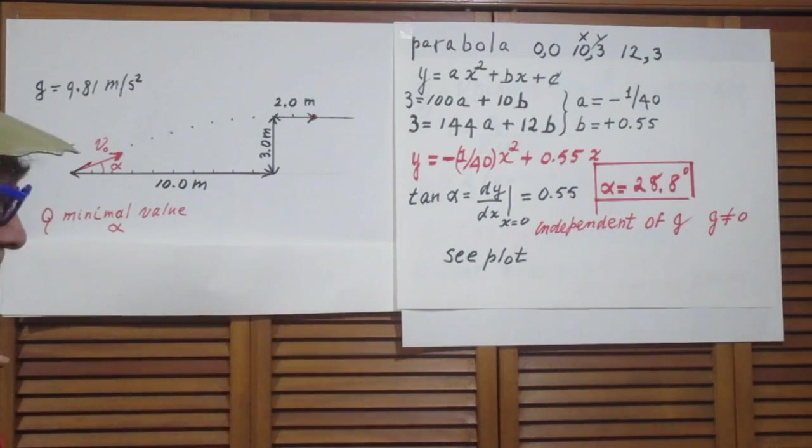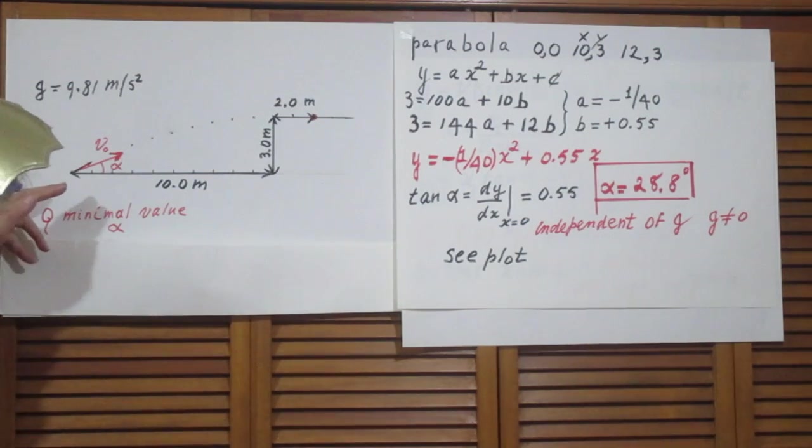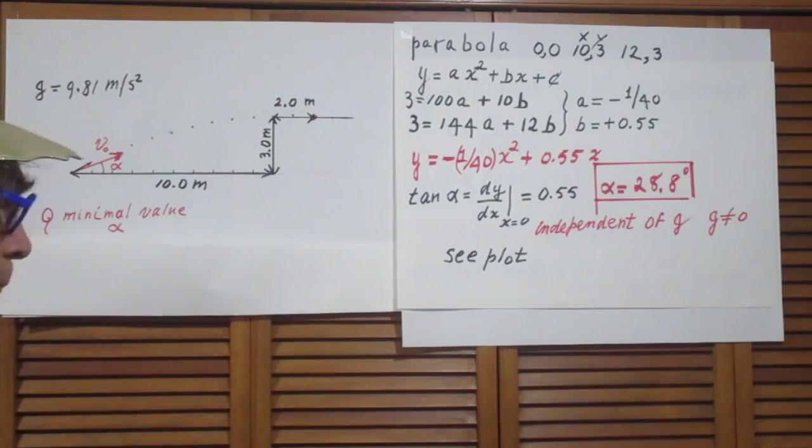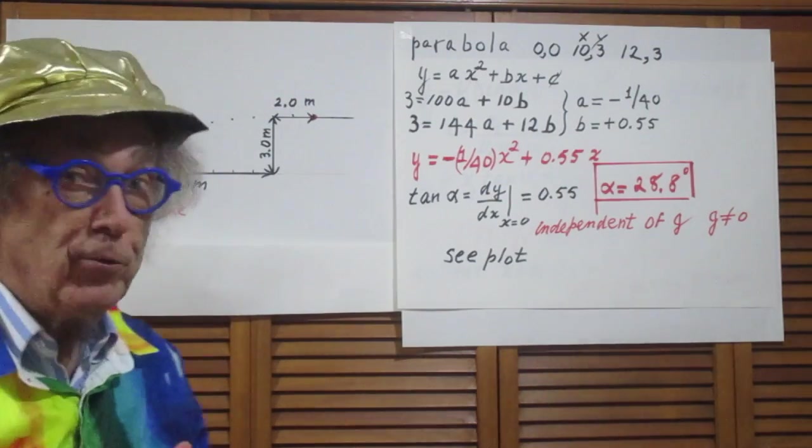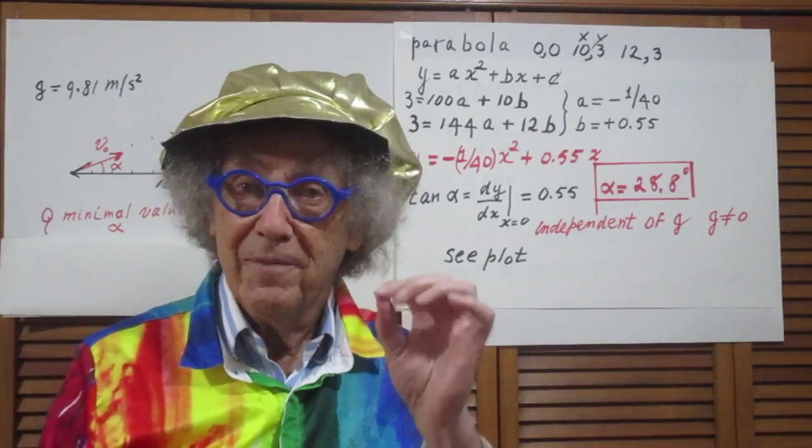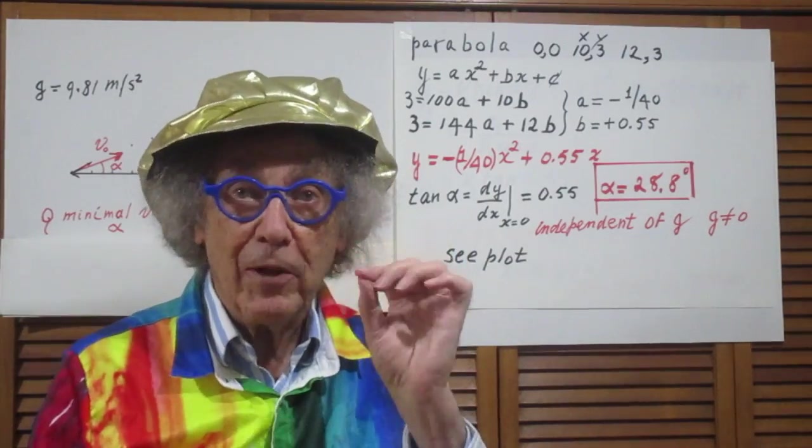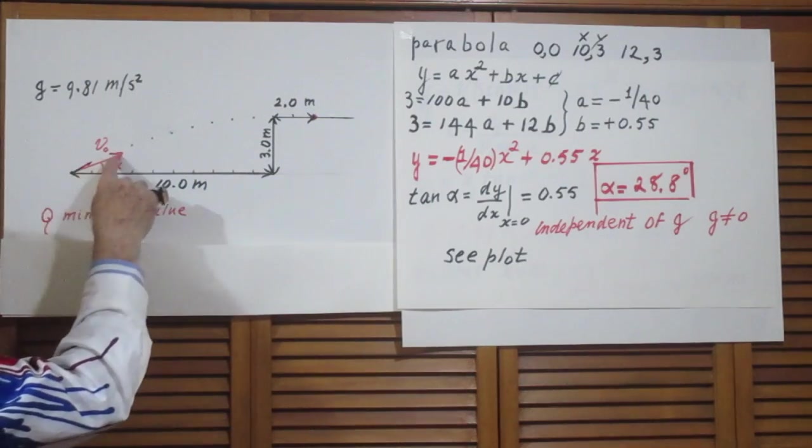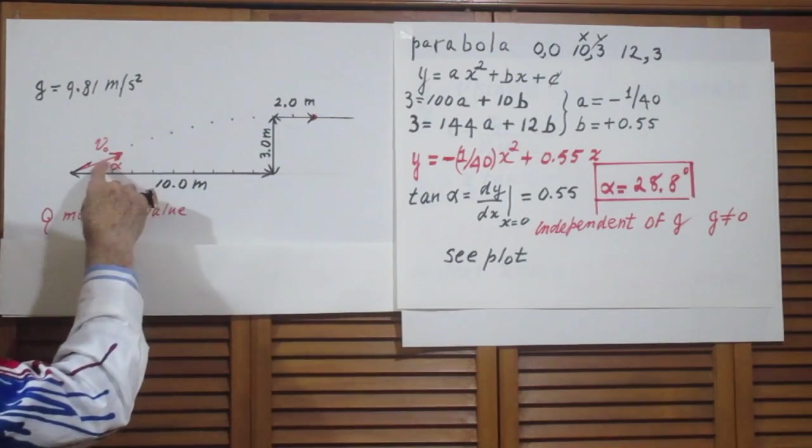I throw an object, it's very small, only a few millimeters. I throw an object in such a way that it hits this target here, but I want to do it with the minimum possible value of alpha. If this is the direction that I shoot it, this is alpha.